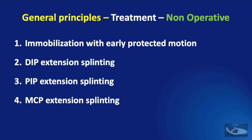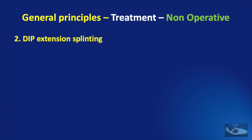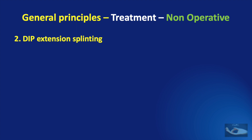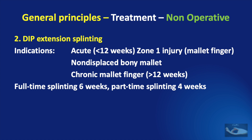The immobilization with early protected motion protocol is indicated for lacerations of less than 50% of the tendon in all zones, but the patient should be able to extend the digit against resistance despite the injury. The DIP joint extension splinting is indicated for acute zone 1 mallet finger injury, for non-displaced bony mallet finger with avulsion of a portion of the terminal phalanx, and also in chronic mallet finger of more than 12 weeks duration. This protocol involves full-time splinting for 6 weeks, continued with part-time splinting for 4 weeks. It is important to avoid hyperextension, which may cause skin necrosis.